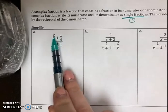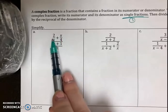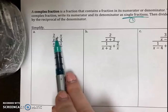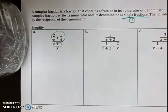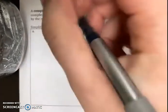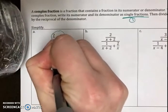In the numerator, though, I have 2 over x plus x over 4. So that's two fractions being added together. This is what I need to simplify. So I'm going to do that real quick. 2 over x plus x over 4.